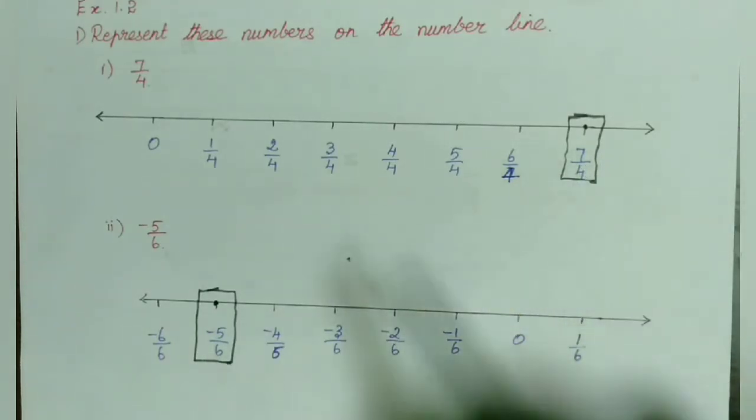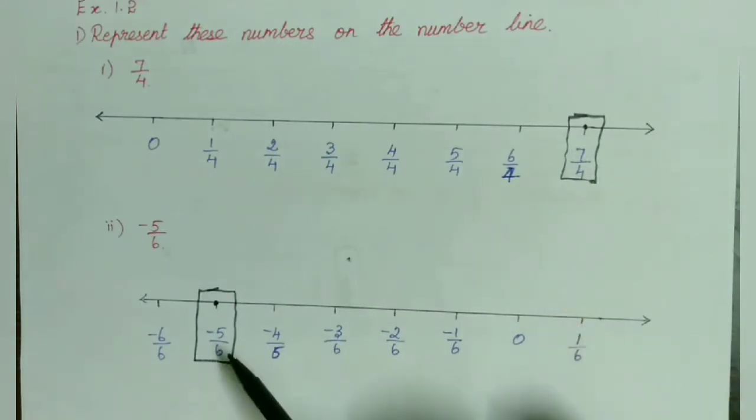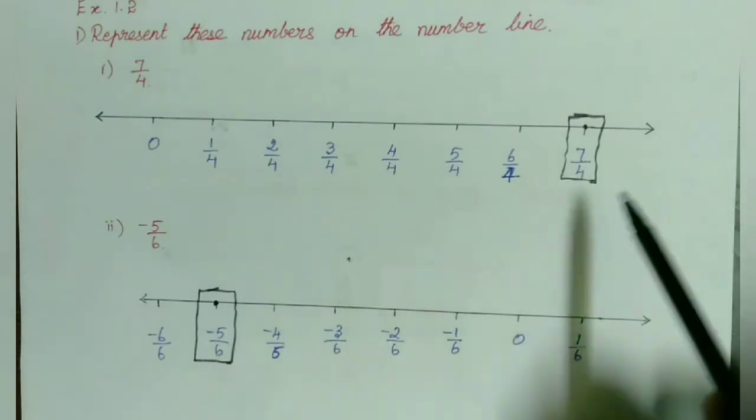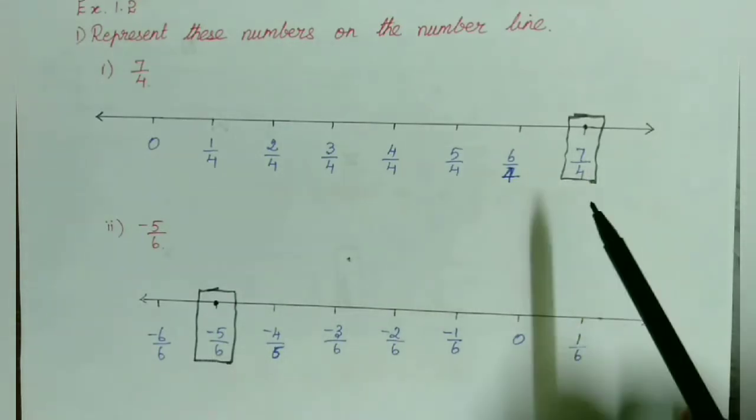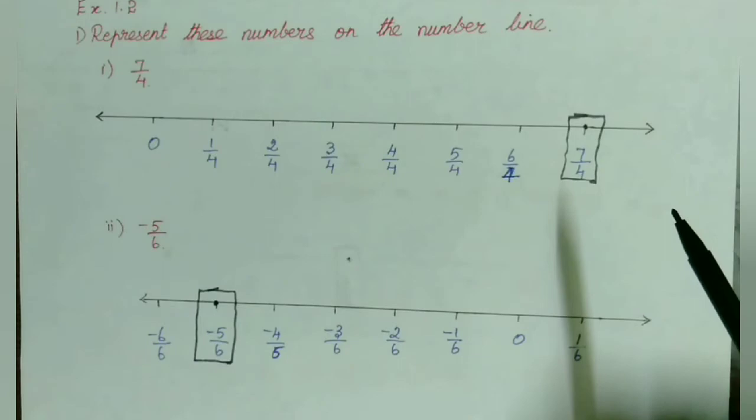This is all we use to represent rational numbers on a number line. In both cases — 7/4 and minus 5/6 — we have represented them on the number line.